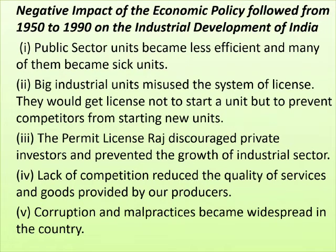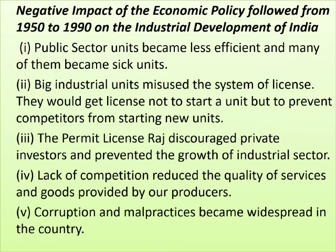Negative impacts of the economic policy followed from 1950 to 1990: public sector units became less efficient and many became sick units. Big industrial units misused the system of licenses — they would obtain licenses not to start production but to prevent competition from starting new units. The permit-license raj discouraged private investors and prevented the growth of the industrial sector. Lack of competition reduced the quality of goods and services provided by producers. Corruption and malpractices also became widespread in the country.